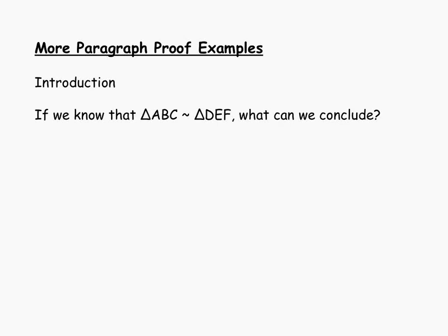In this lesson, we're going to be taking a look at some more examples of writing paragraph proofs. In our last lesson, our proofs mainly involved just proving that a pair of triangles was similar. In this lesson, we're going to go a little bit beyond that and show that either a pair of sides is proportional in similar triangles, or that perhaps a pair of angles is congruent in a pair of similar triangles.